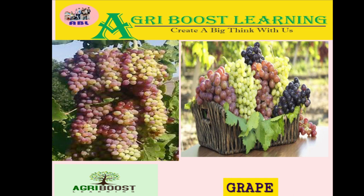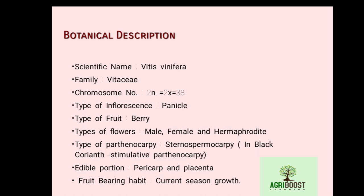First, the botanical description of grape. The scientific name of grape is Vitis vinifera, it belongs to the family Vitaceae, and the chromosome number is 2n = 2x = 38. The type of inflorescence present in grape is panicle, and the fruit type is berry.